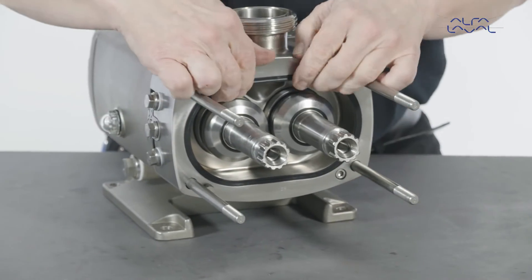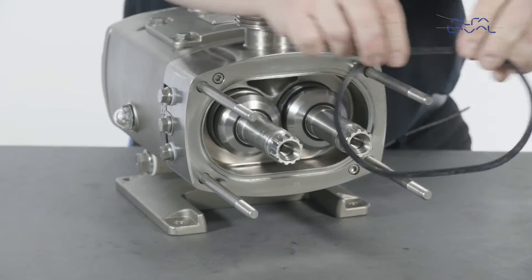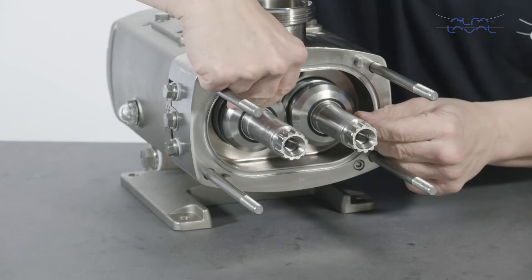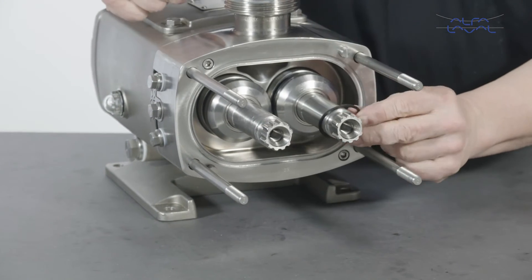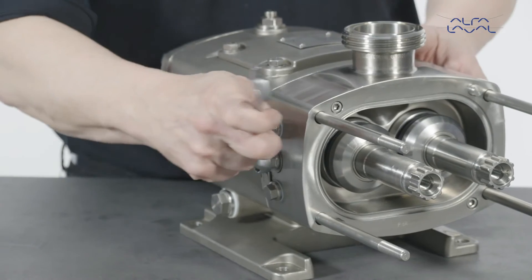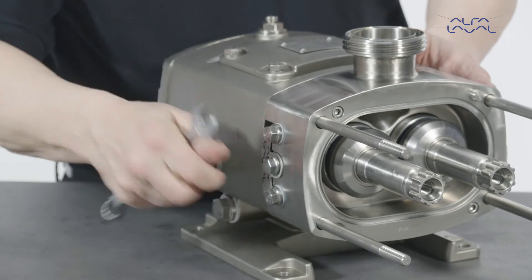Now remove the pump casing elastomer and shaft sealing elastomers. Next, remove the seal retaining plugs and gland guards.